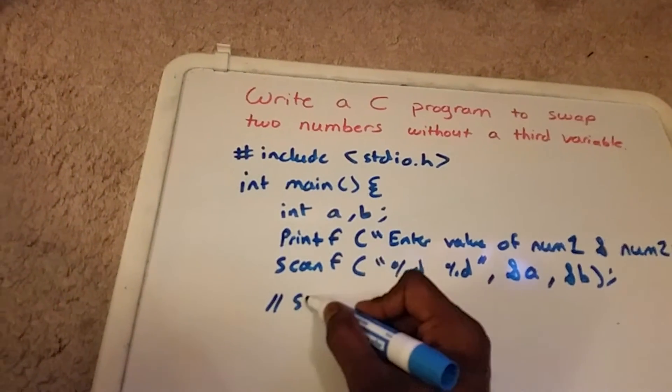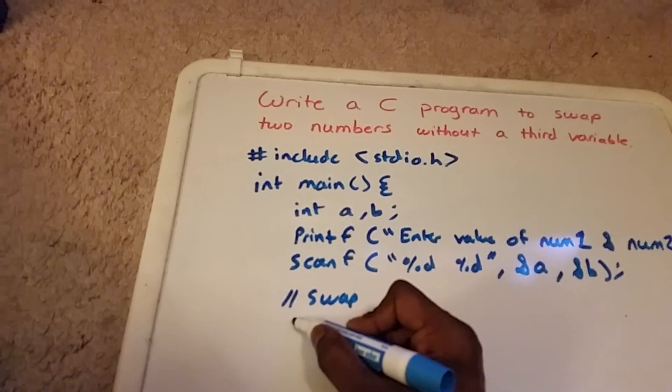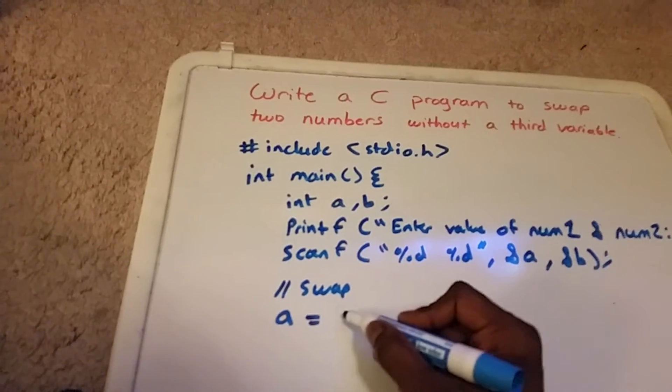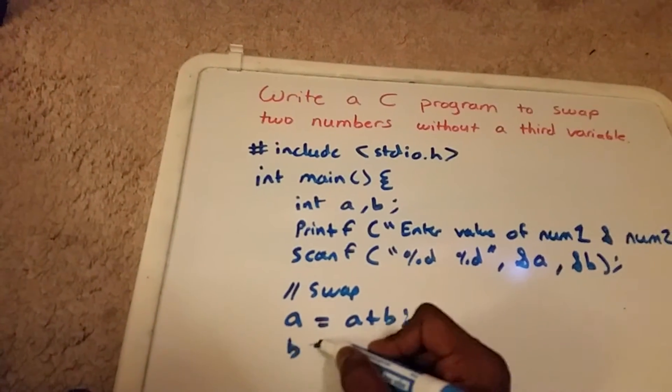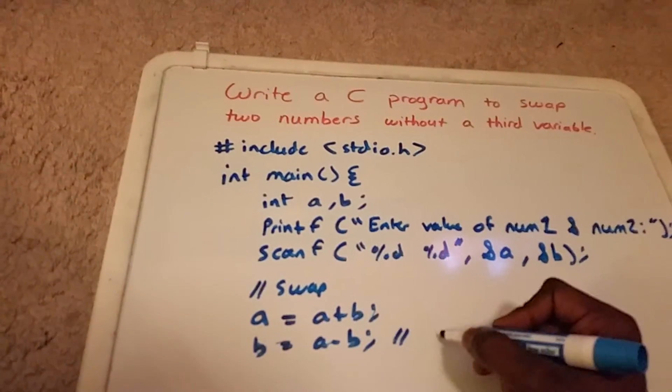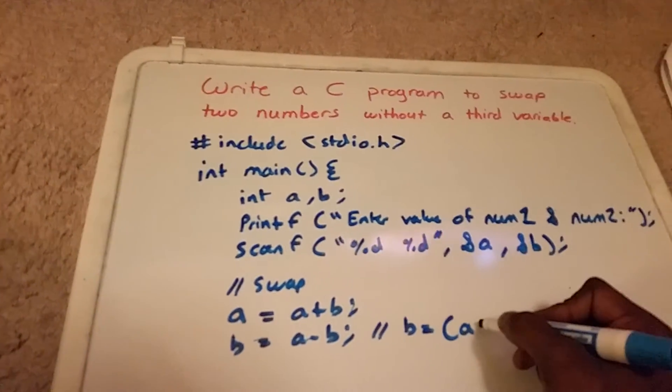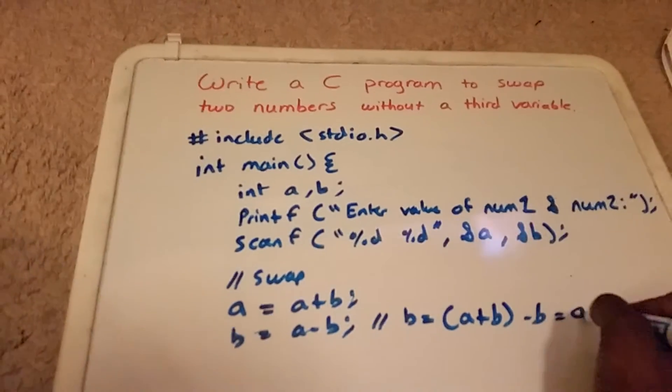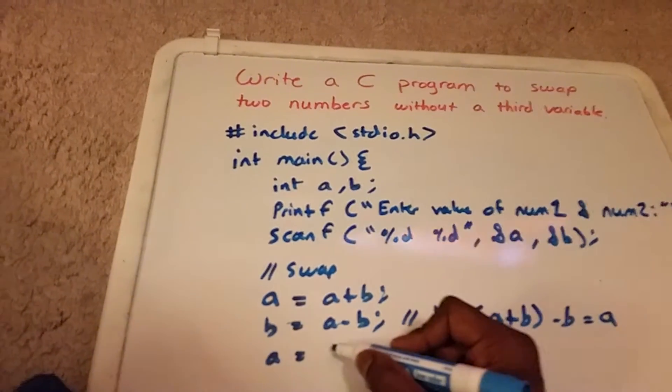So this is where some math comes in handy. a equals a plus b. b is going to equal a minus b, so this right here is the same thing as saying b equals a plus b minus b, so equals a. And then we want a to equal a minus b, because this is the same as saying a equals a plus b minus b.